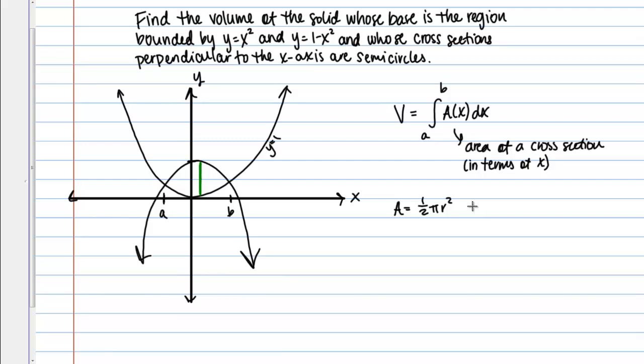What is the radius of one of these semicircles in terms of these equations I'm given? So remember this upward facing parabola is Y equals X squared. My downward facing parabola is Y equals 1 minus X squared. So remember that this green line in my graph here represents the diameter of the semicircle.